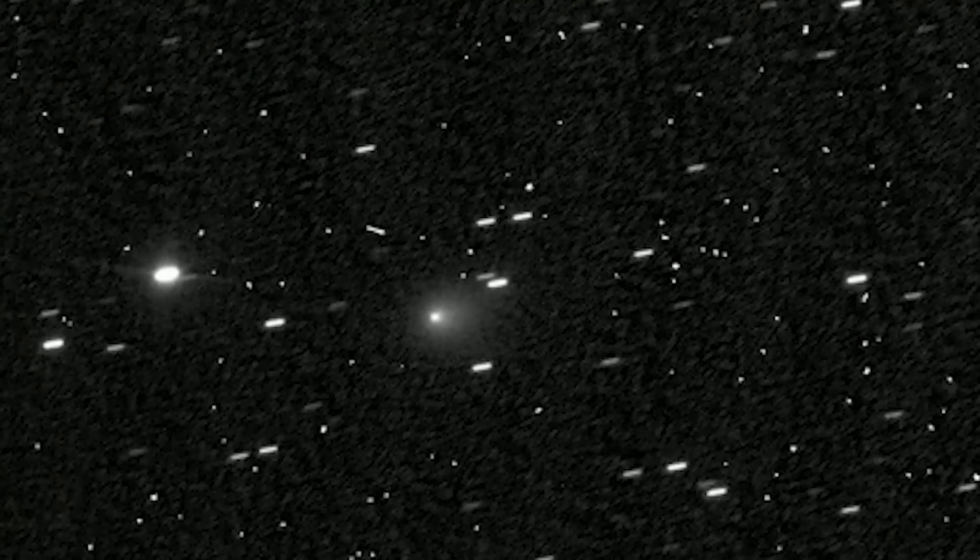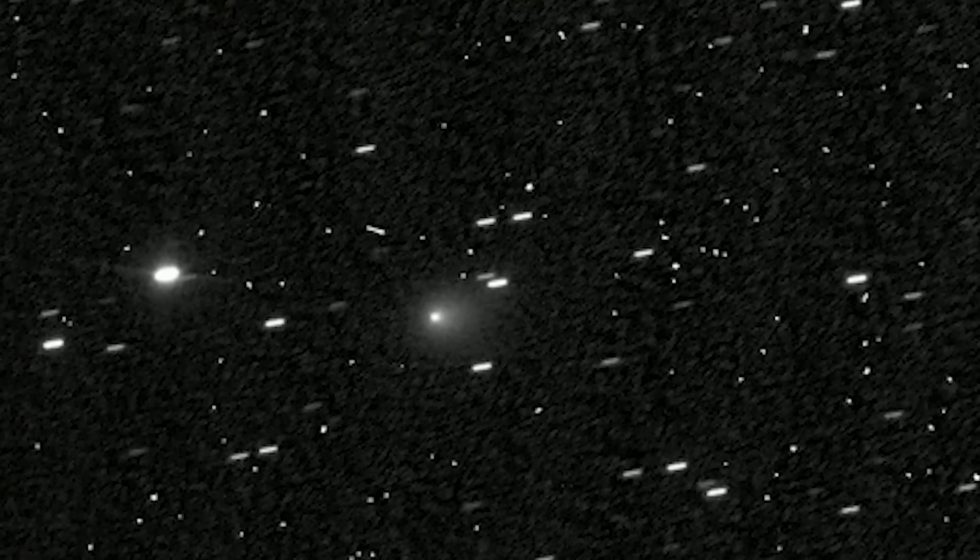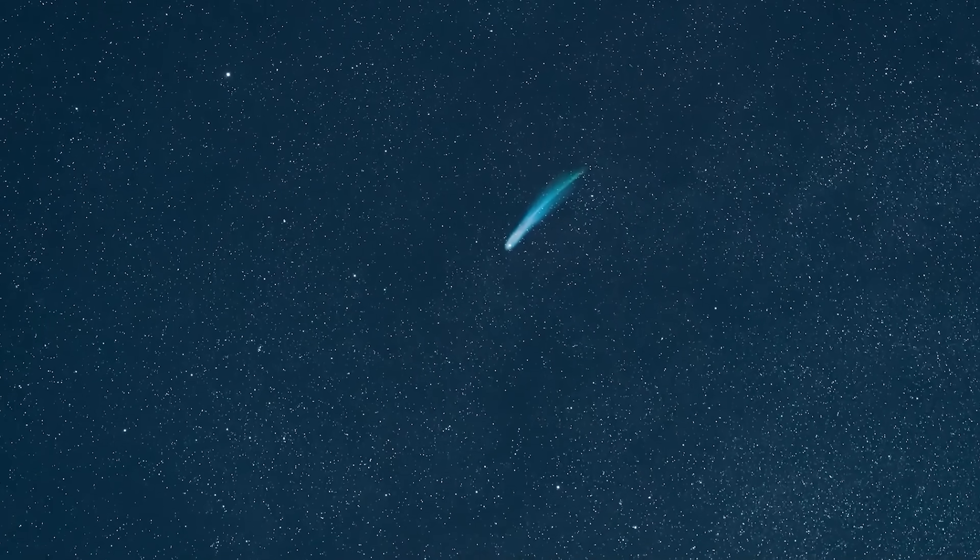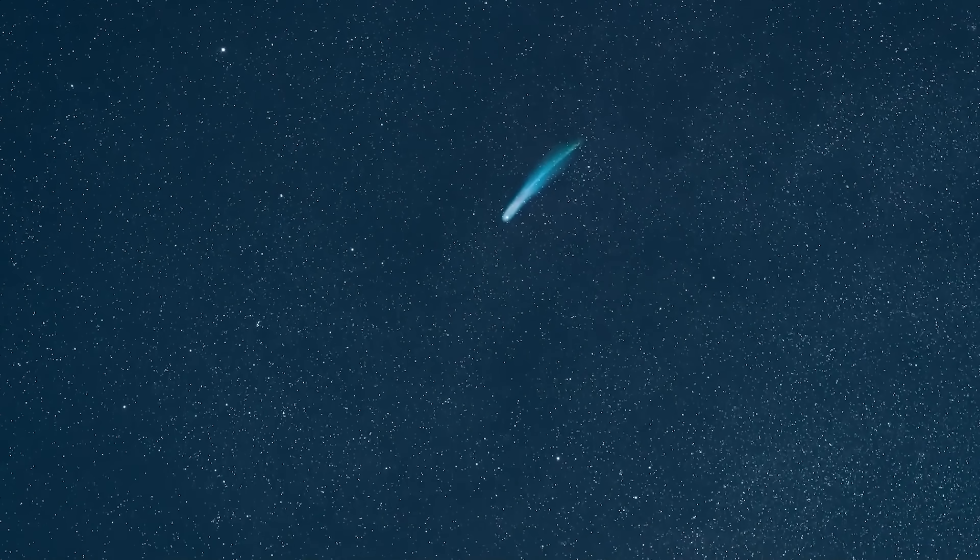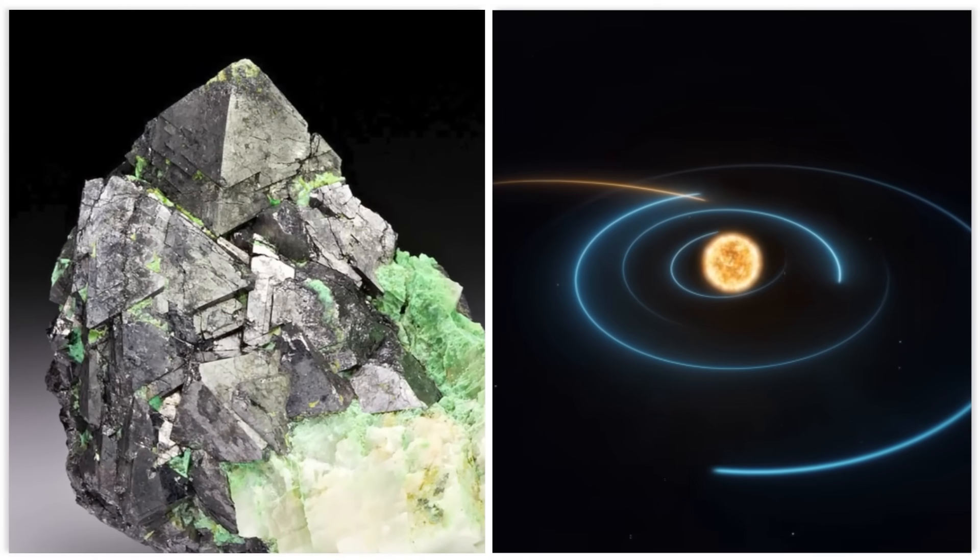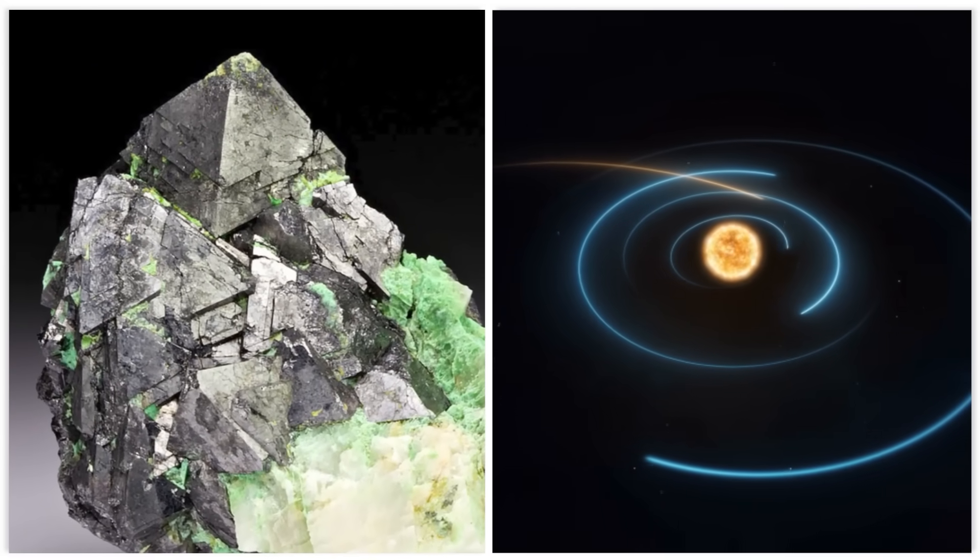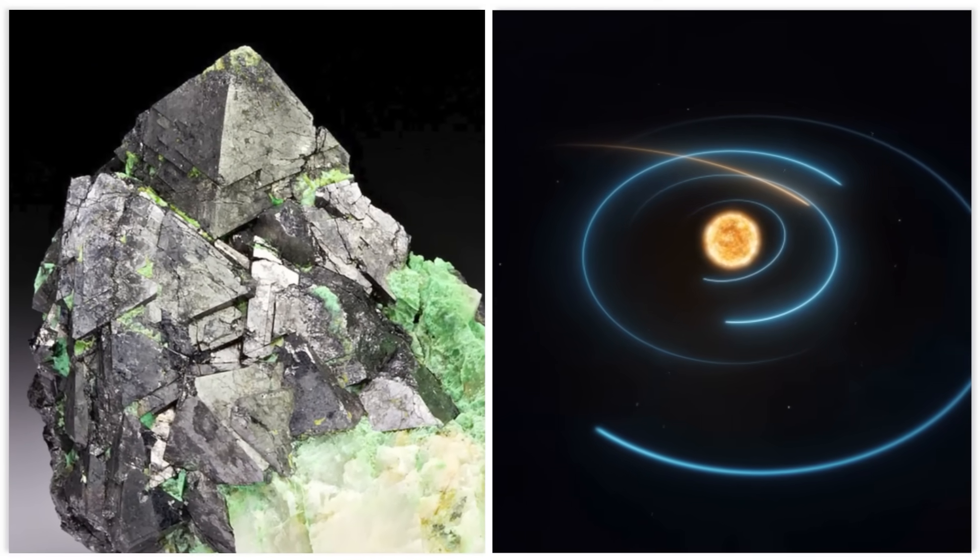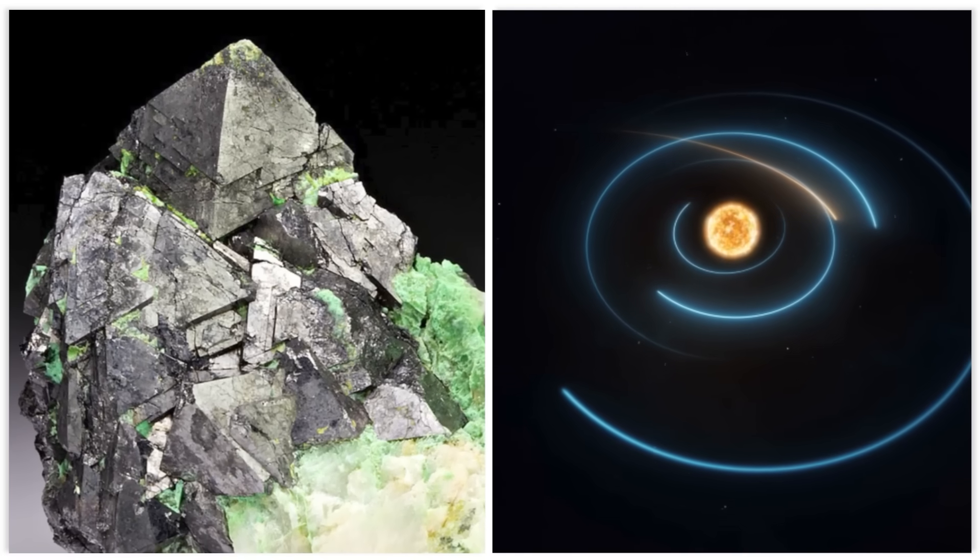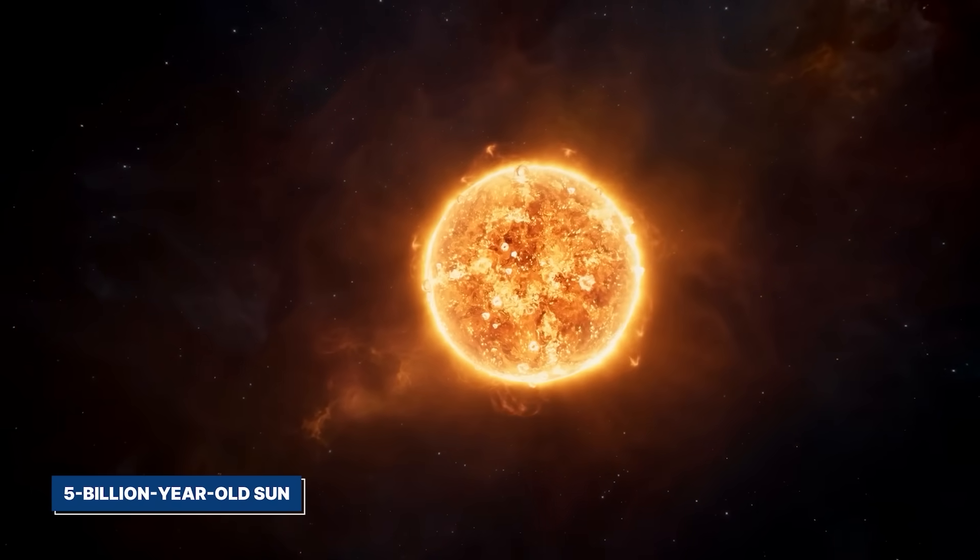3I Atlas, however, dares to break several rules at once. Its bizarre chemistry, displaying that inverted carbon dioxide-to-water ratio and the odd nickel-without-iron signature, hints at a birthplace far older than our own solar system, perhaps even predating its formation. The Otahe-Oxford model, a leading theory, suggests 3I Atlas could be around 7 billion years old, making it older than our 5 billion-year-old sun.